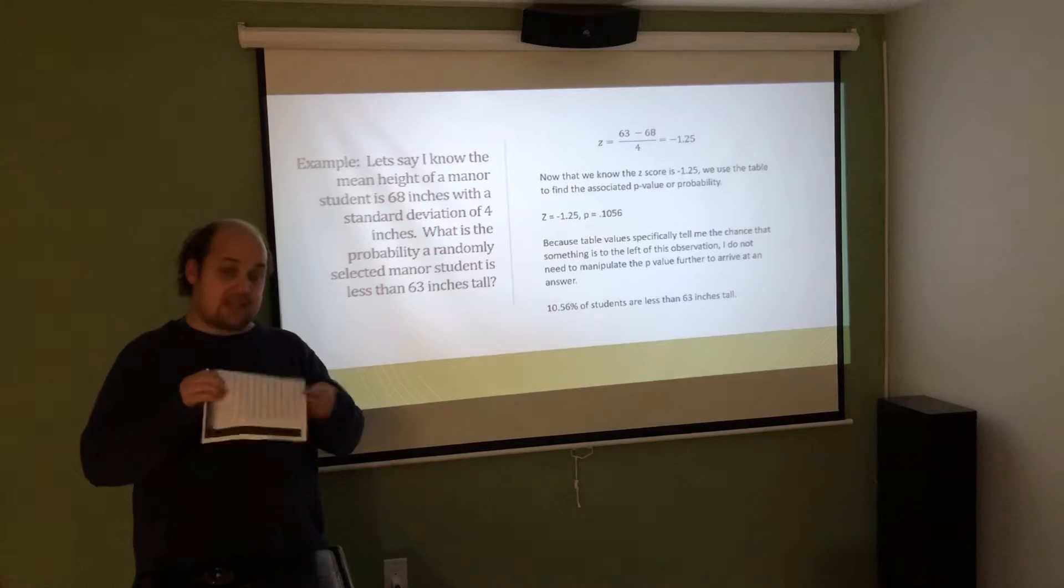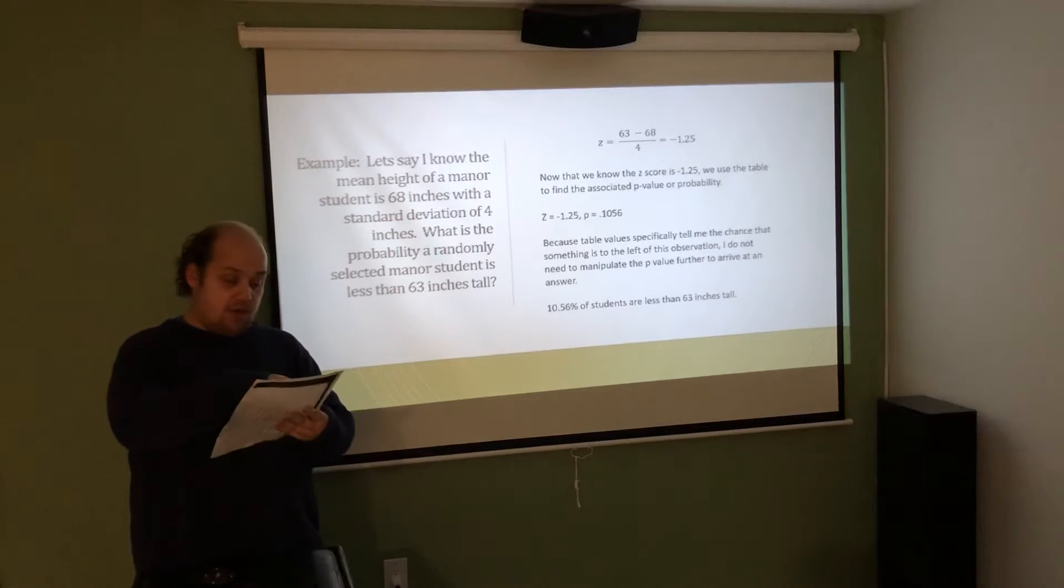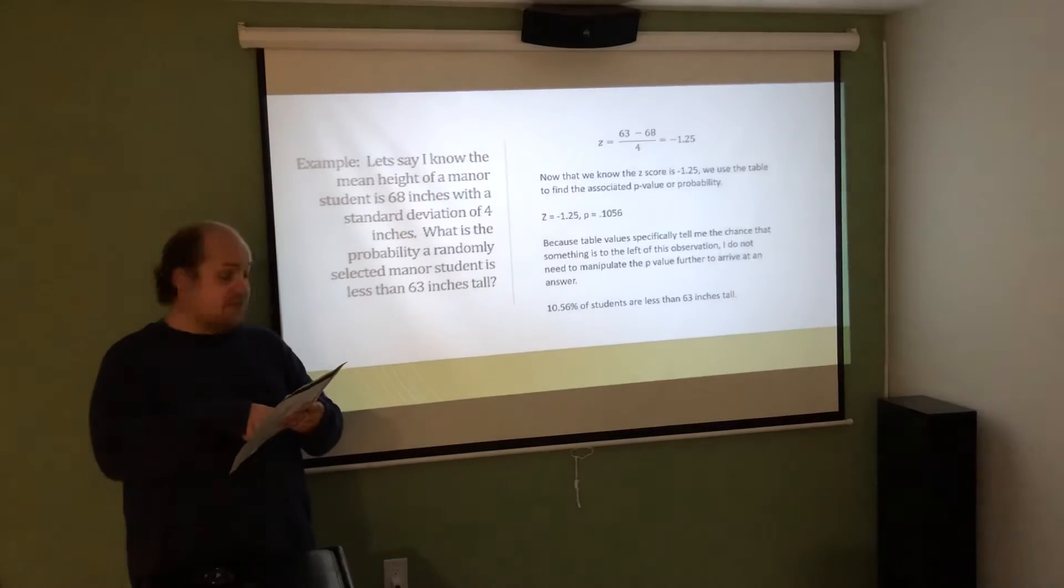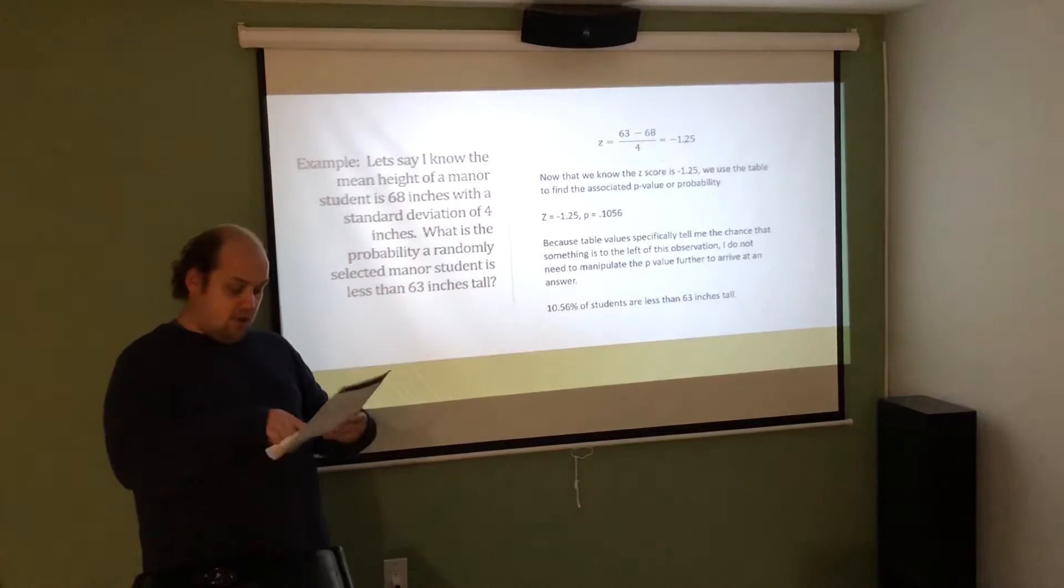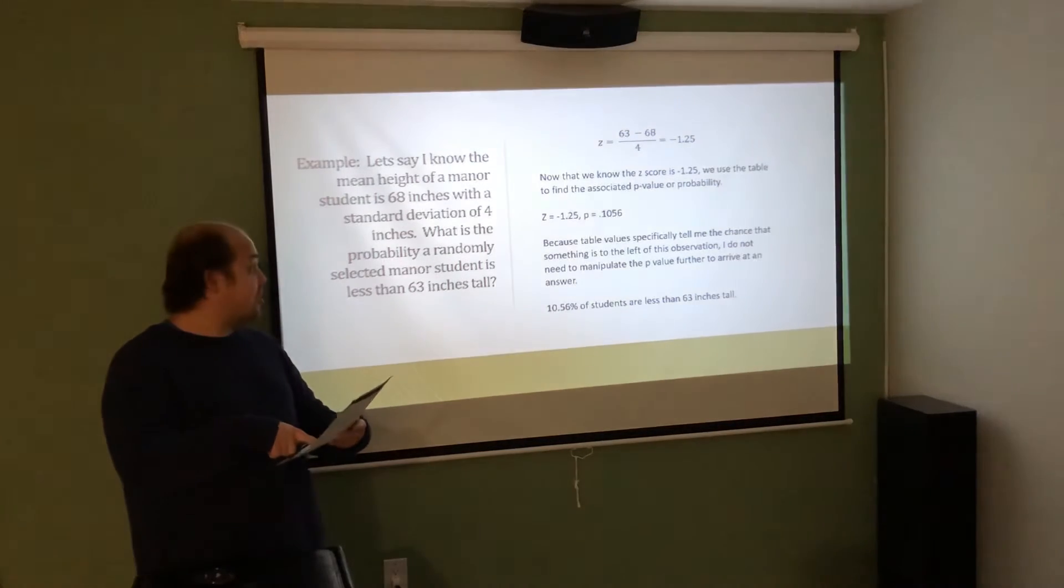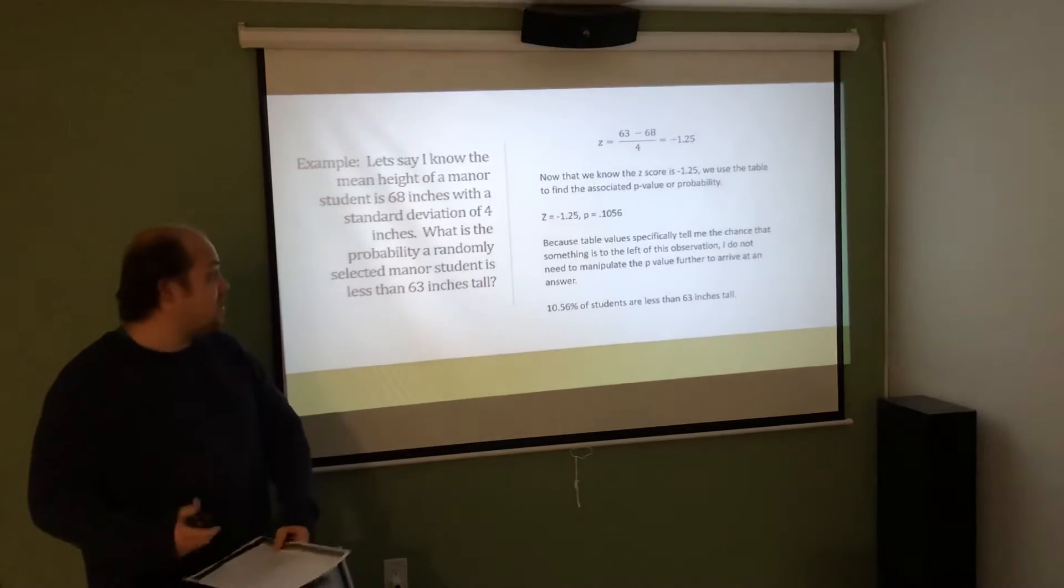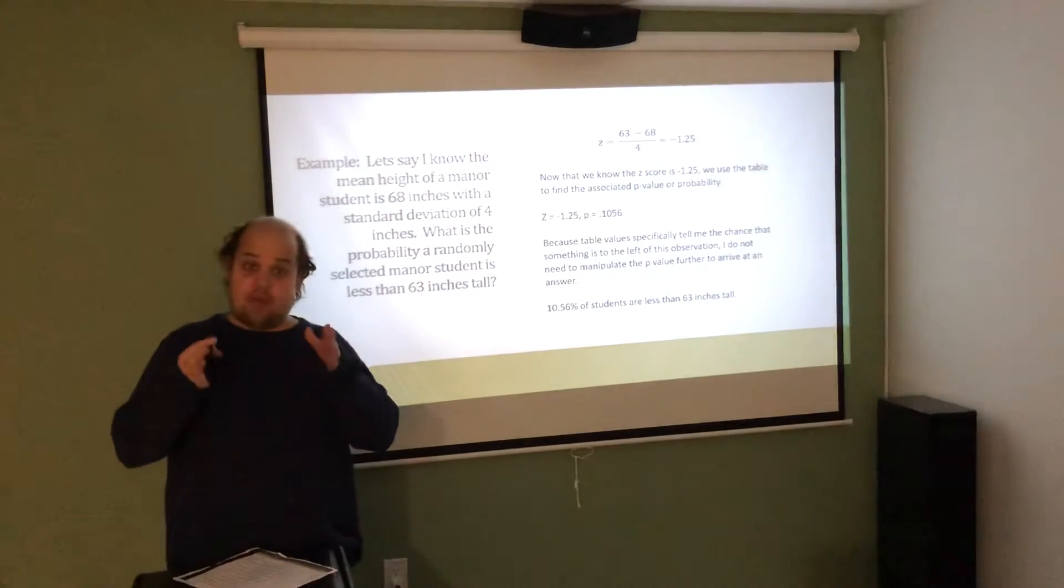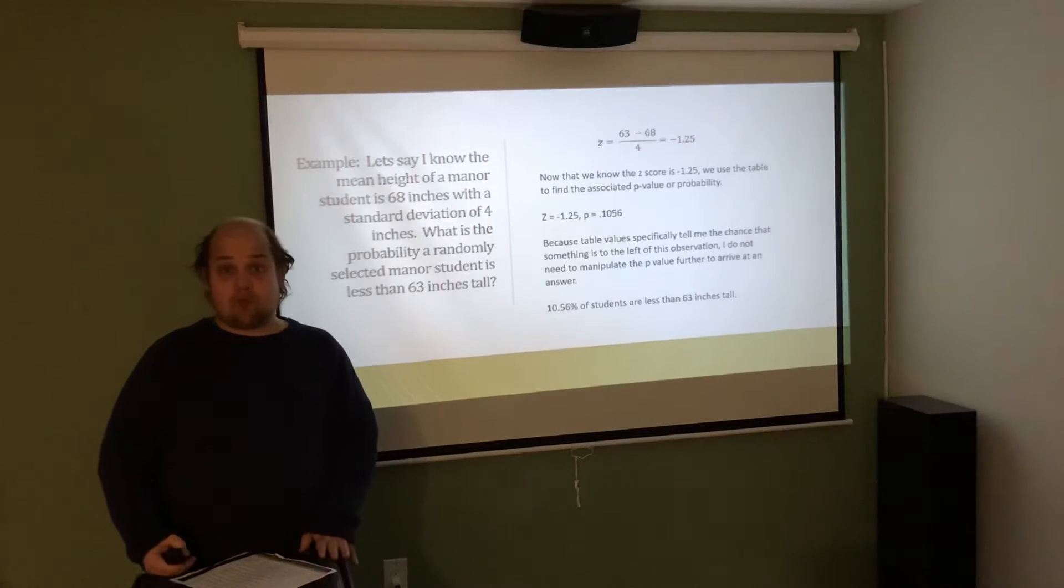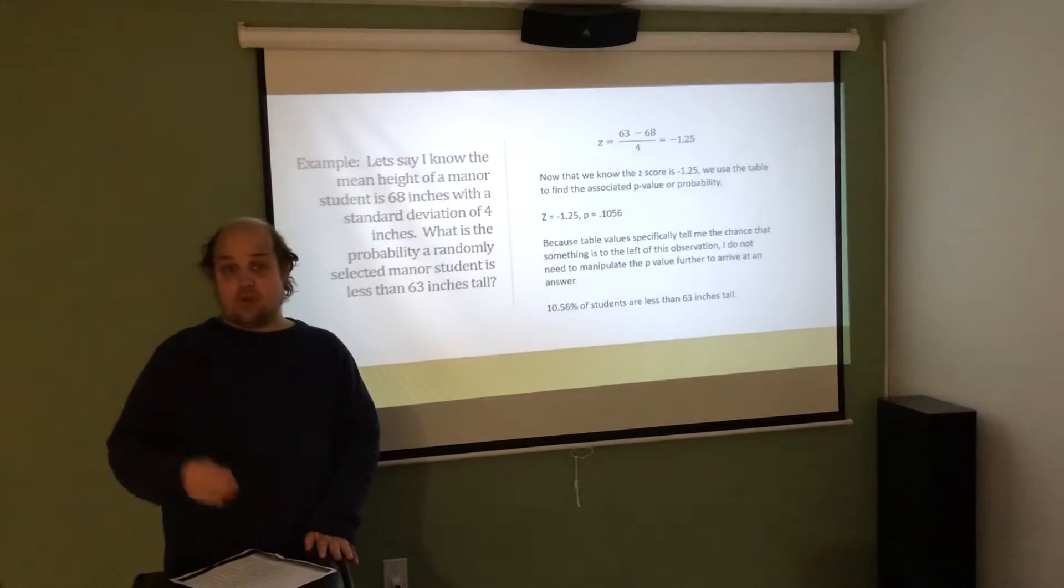To do that, I need to go to my chart, make sure I'm on the side that's negative, go down to negative 1.2. Once I've identified the row that's negative 1.2, go over to 0.05. When I line that up in my table, I should get what I get up there, which is a p-value of 0.1056. So now I've gone from a prompt that was written as a word problem to a z-score to a probability.